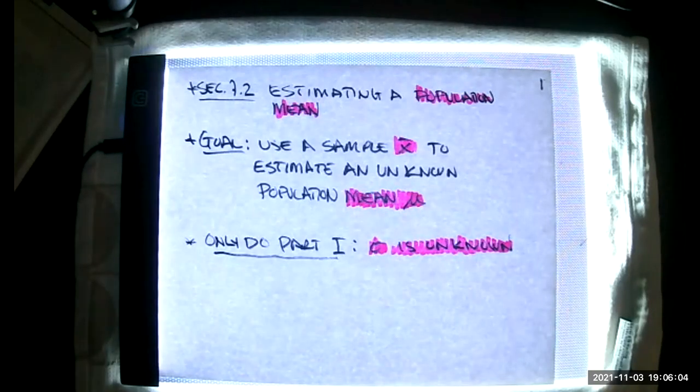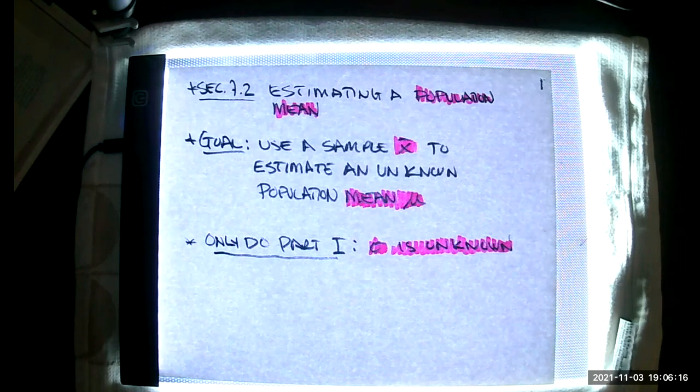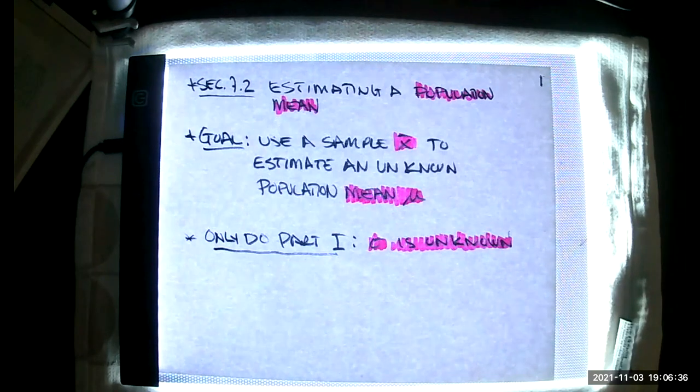Welcome Math 13 students. We're going to look at section 7.2, estimating a population mean. The goal here is to use a sample mean, x bar, to estimate some unknown population mean mu. We only do part one, where the sigma, the standard deviation of the population, is unknown. It's highly unlikely that one would know a population standard deviation and yet be ignorant about the mean.